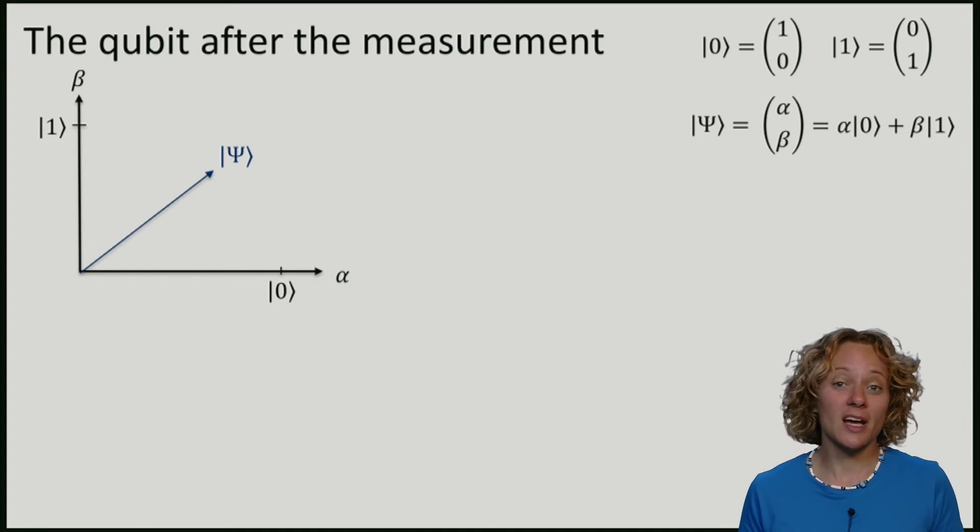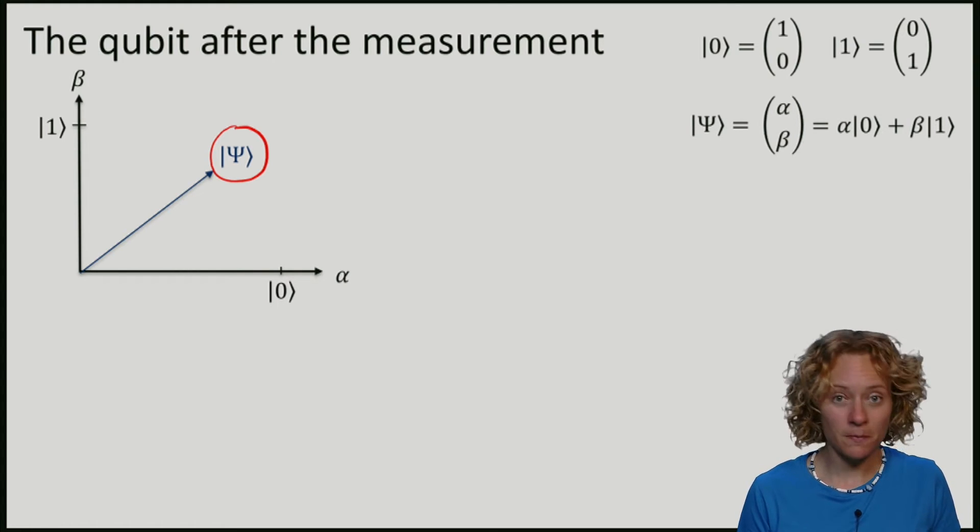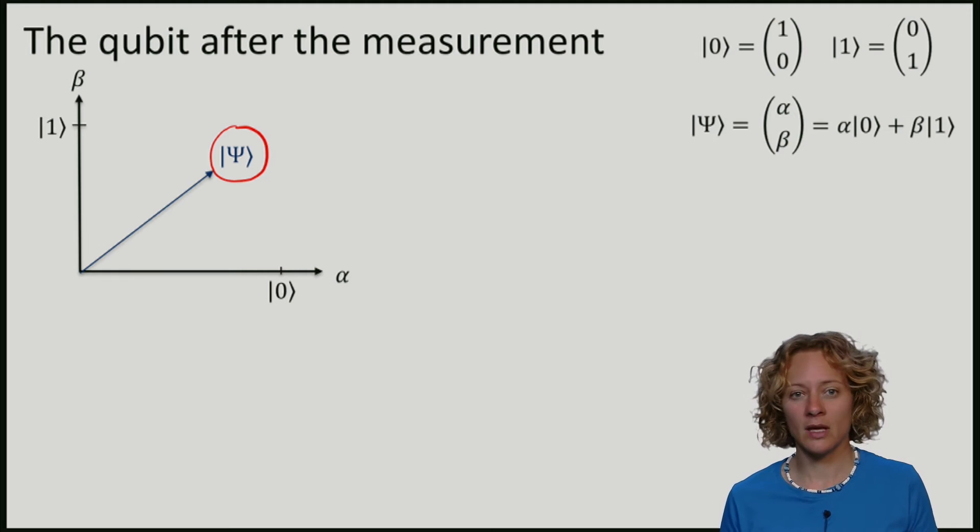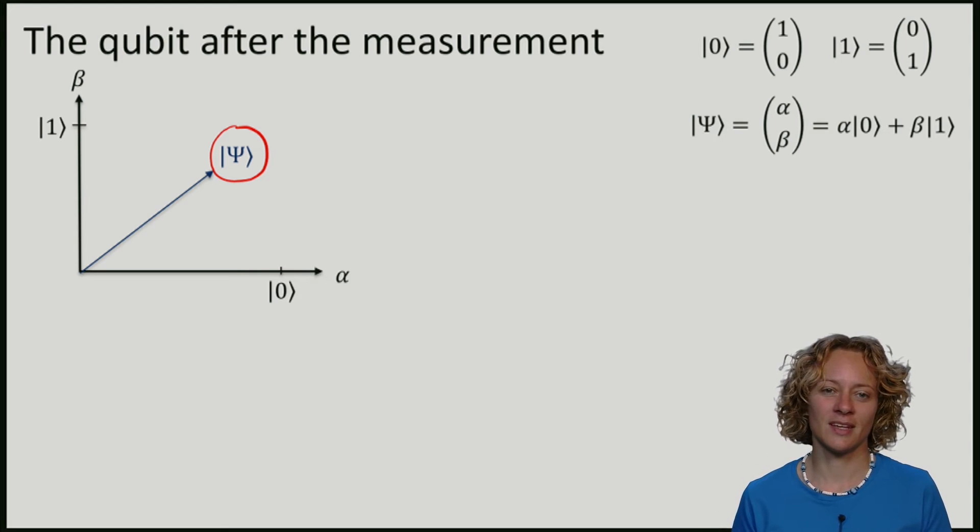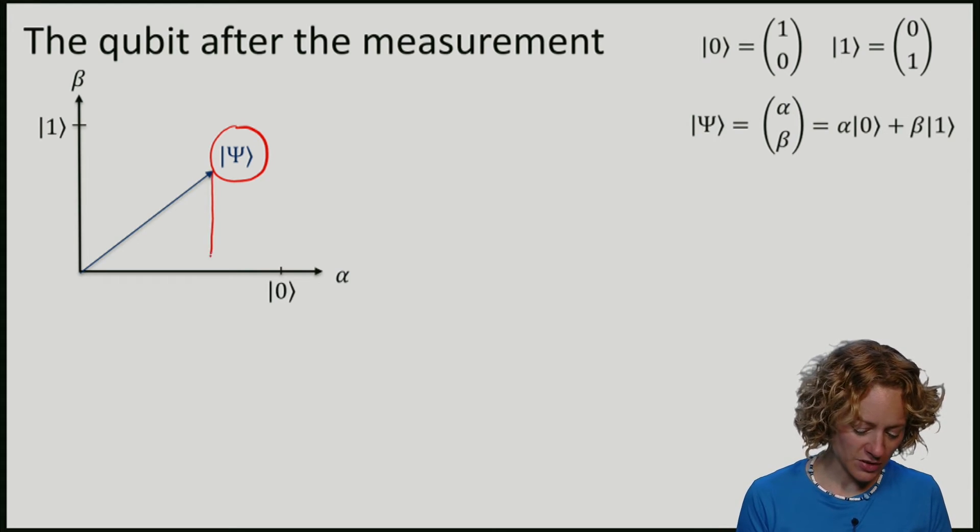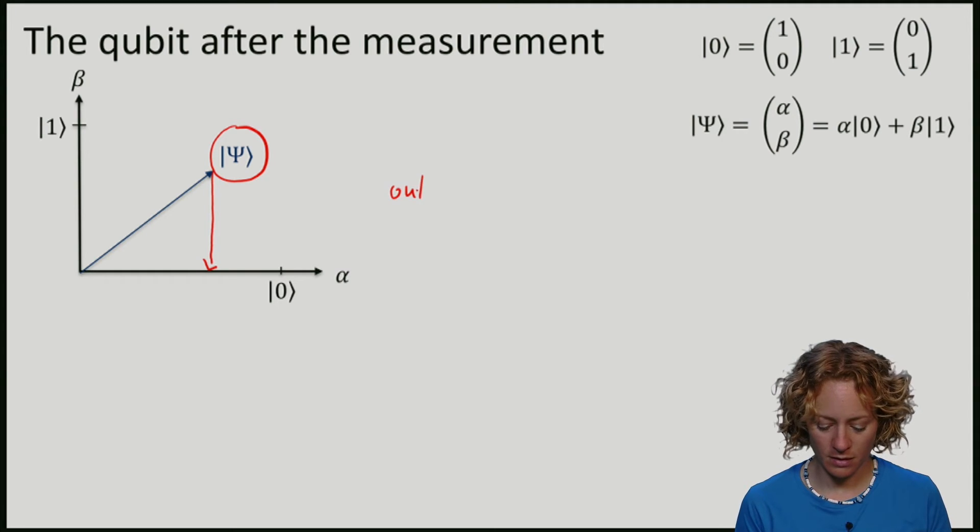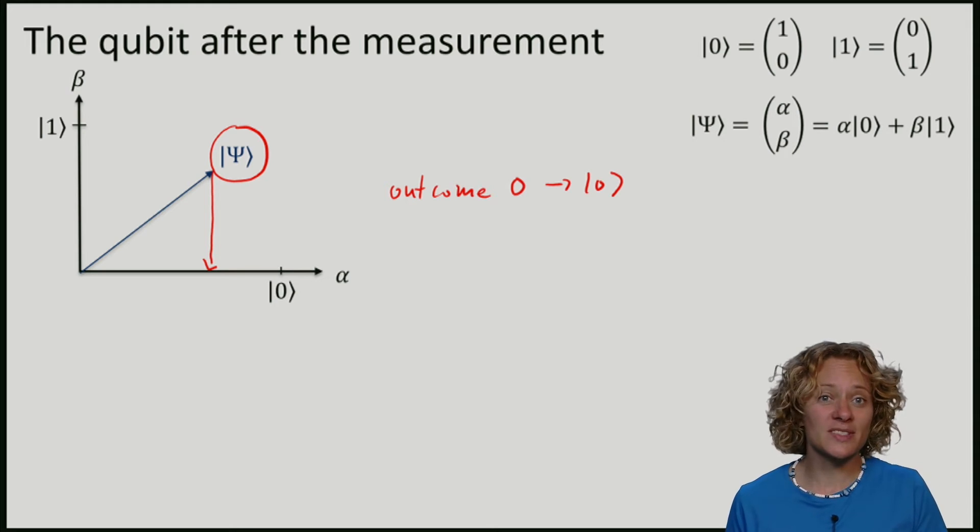What happens to our qubit after we measure it? Let's say that this is our qubit. And let's say that we have measured it and we found the measurement outcome to be 0. This only occurs with some probability, but let's say that we end up there. If we obtained outcome 0, the qubit will now be in the state 0.